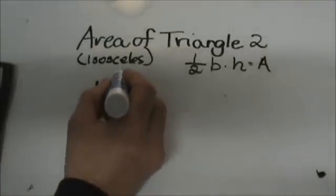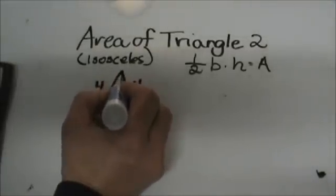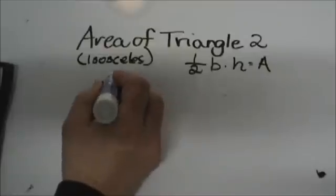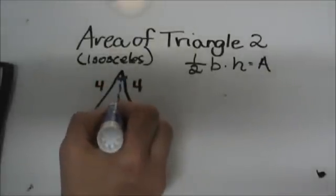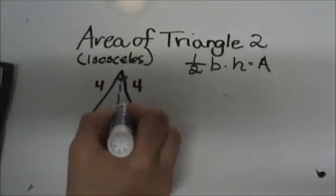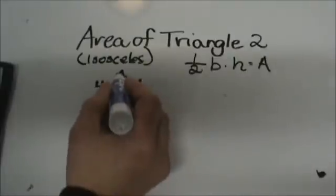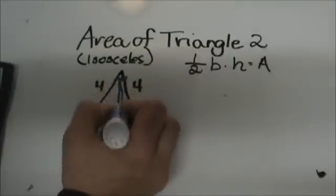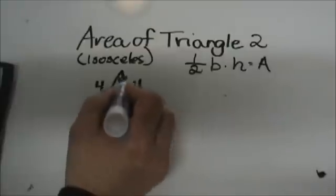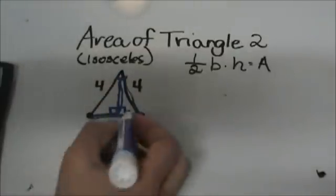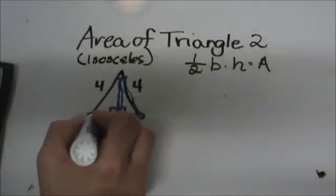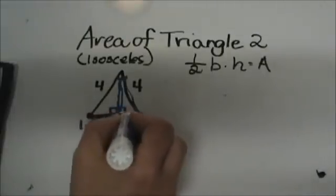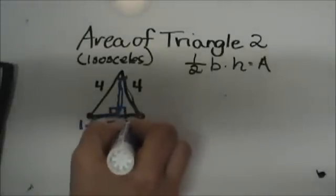To find the height, I am going to draw an altitude straight down out of what we call the vertex angle up here, and it creates a right triangle. Since this is an isosceles triangle, we know that the two triangles on the left and on the right are the same. We have taken this base of three and split it into two halves, so each section is one and a half.